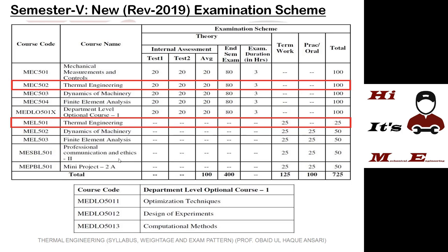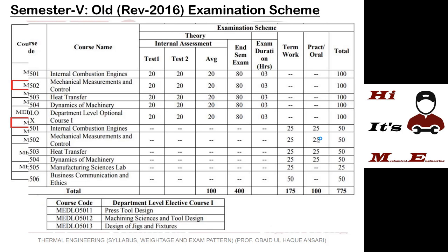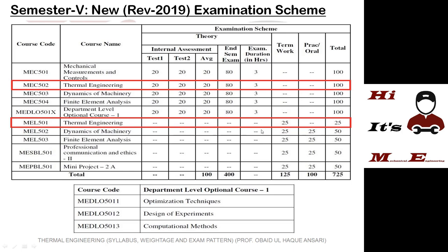In the old scheme the compulsory subjects were dynamics of machinery, heat transfer, mechanical measurement and control, and internal combustion engines. In the new scheme, mechanical measurement and control is retained but the practical and oral have been totally removed — there is no practical based on mechanical measurement and control now. Dynamics of machinery is also retained but it will only be in theory content with a few changes.